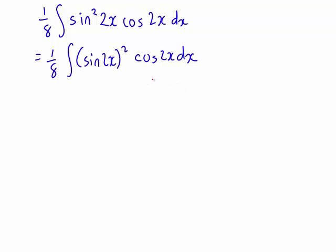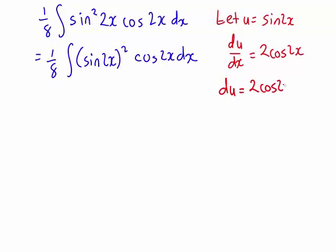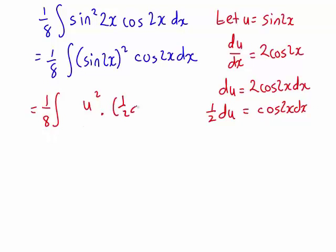That is suggesting that integration by substitution will in fact be the best way to approach integrating this expression. In particular, if we let u be equal to sin 2x, du dx is 2 cos 2x. So therefore du is 2 cos 2x dx. When we're then starting to rewrite our integral, we now have one eighth times the integral of u squared. But because we just have cos 2x dx here, rearranging to make that the subject, we find that is actually a half du.